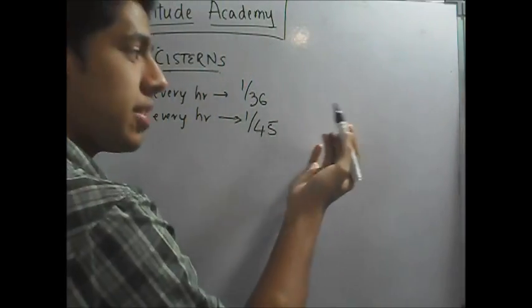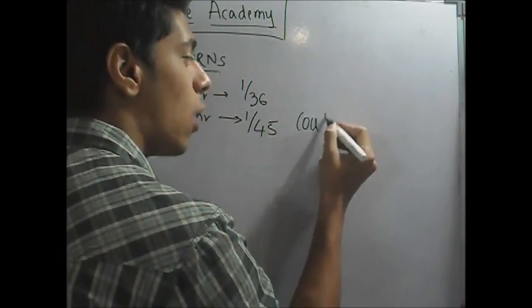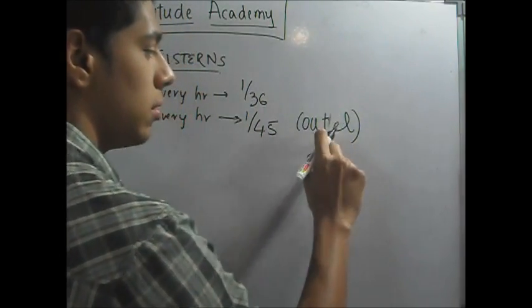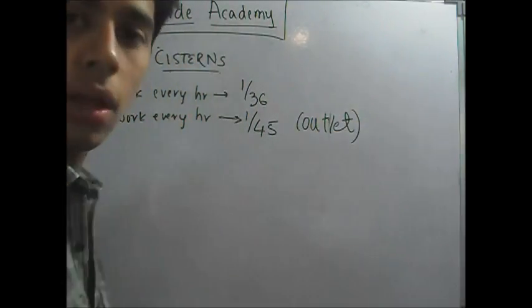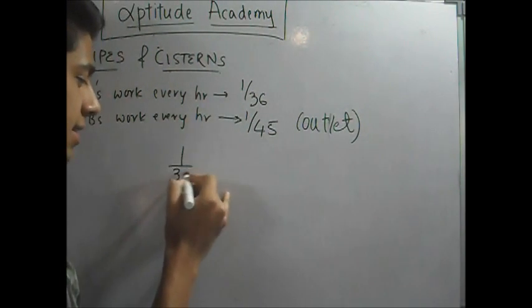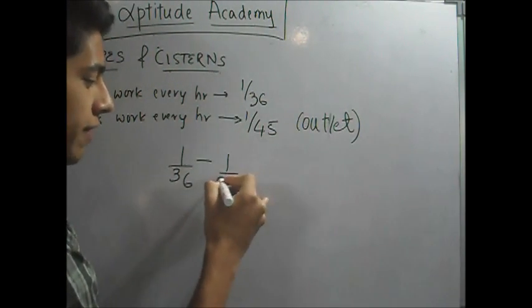The work remains the same. But just for our reference, write it here as an outlet. Okay. Now, the total work will be given as 1 over 36 minus 1 over 45.